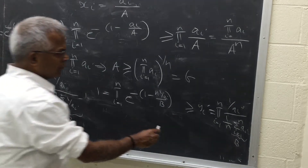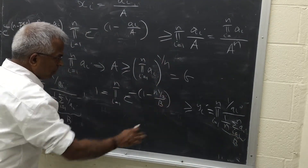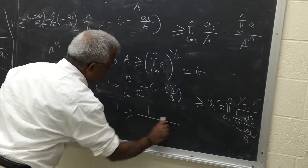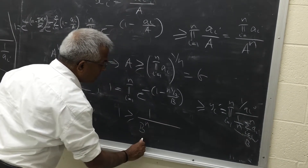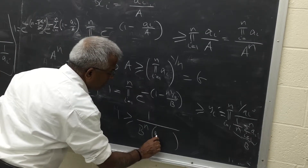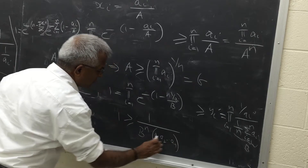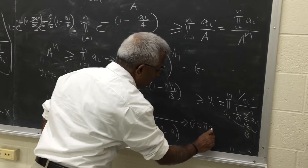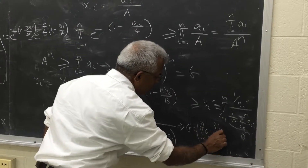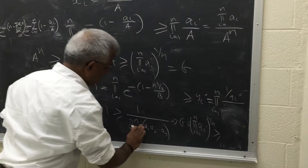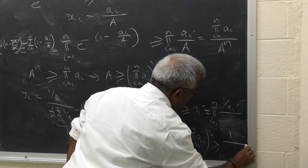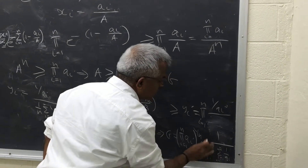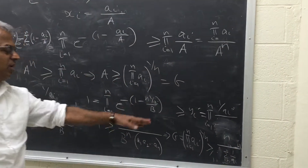Bringing everything to the power n and rearranging, we get 1 ≥ (1/b^n) · (a_1 · a_2 · … · a_n). Taking the nth root gives the geometric mean G = (product of a_i's)^(1/n) ≥ 1/b = 1/(1/n · Σ(1/a_i)), which is the harmonic mean. So G ≥ H, and the proof is complete.